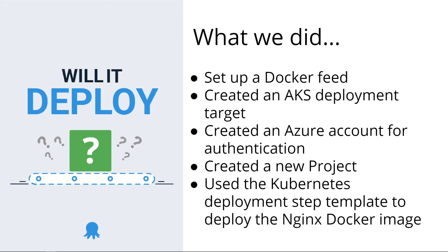So now let's take a look at what we did. We set up a Docker feed so we could connect to Docker Hub. We then created an AKS deployment target and an Azure account for authentication to the AKS cluster. We then created a new project, and used the Kubernetes deployment step template to deploy an NGINX image to our AKS cluster. Thank you so much for watching, and we'll see you again next time on Will It Deploy!